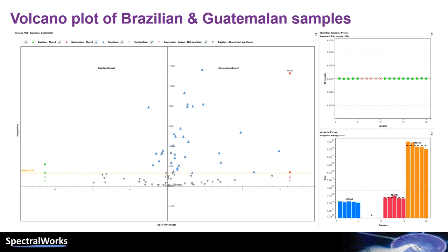Nevertheless, the PCA score plot shows there is a difference between Brazil and Guatemalan beans. To further explore this, we can use the Volcano plot in Analyzer Pro XD.